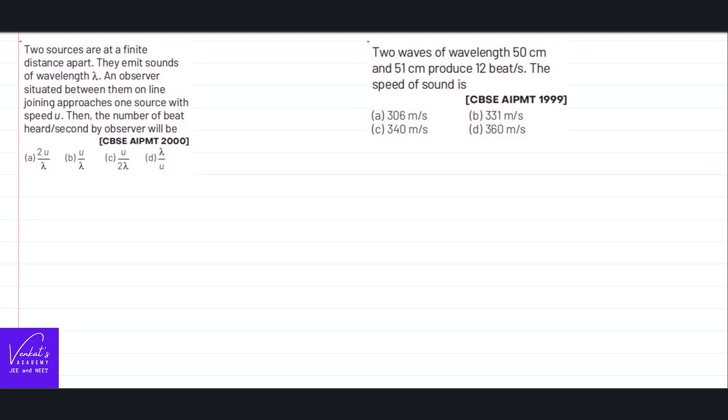These are the two simple problems that we are solving in waves concept. The first problem is: two waves of wavelengths 50 and 51 produces 12 beats per second, then what is the speed of the wave?